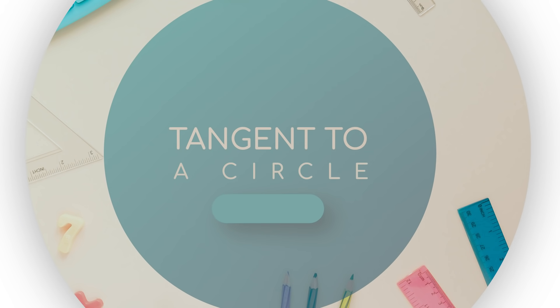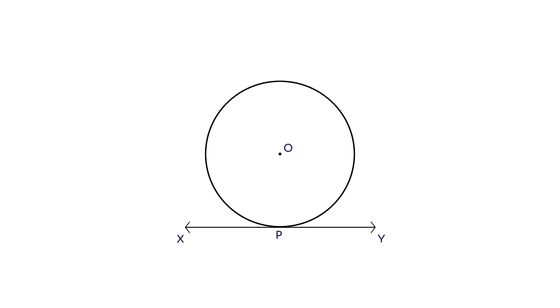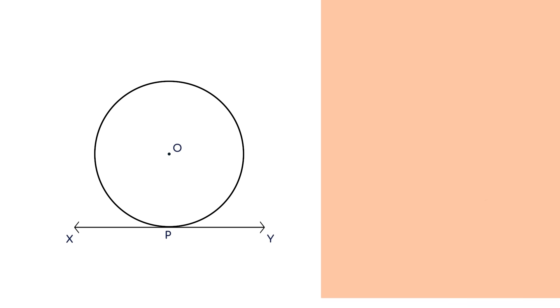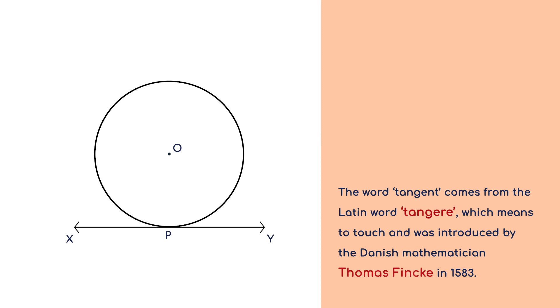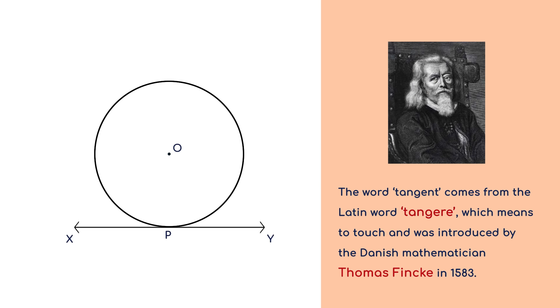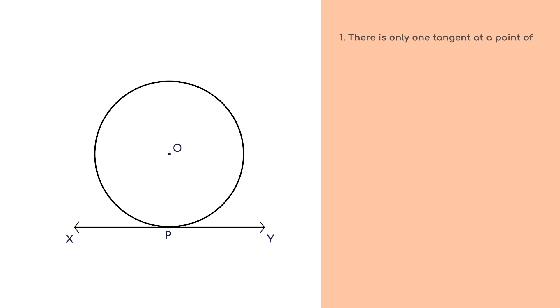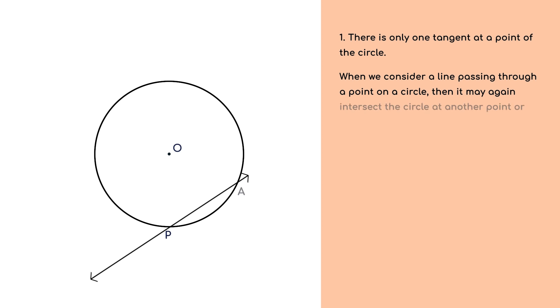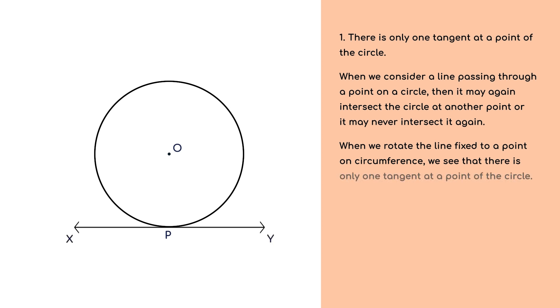Tangent to a circle. In the previous section, you have seen that a tangent to a circle is a line that intersects the circle at only one point. The word tangent comes from the Latin word tangere, which means to touch and was introduced by the Danish mathematician Thomas Fincke in 1583. 1. There is only one tangent at a point of the circle. When we consider a line passing through a point on a circle, then it may again intersect the circle at another point or it may never intersect it again. When we rotate the line fixed to a point on circumference, we see that there is only one tangent at a point of the circle.